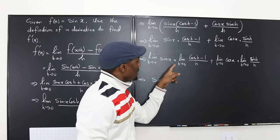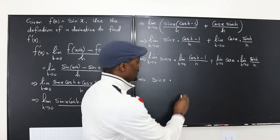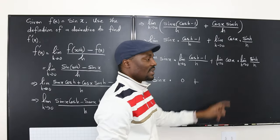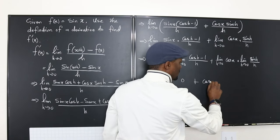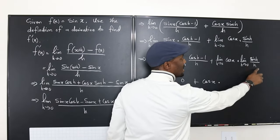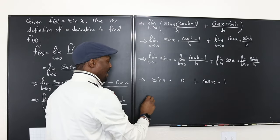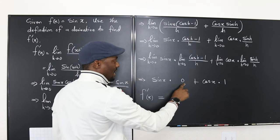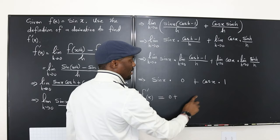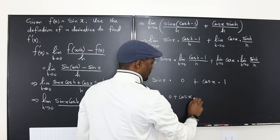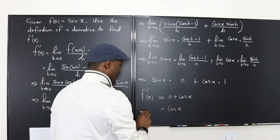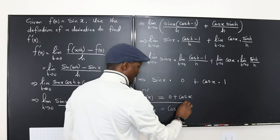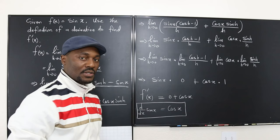The limit of (cosine h − 1)/h is 0, and cosine x has nothing to do with h so it stays, multiplied by the limit of sine h over h which is 1. So f prime of x equals sine x times 0, plus cosine x times 1, which equals cosine x. Therefore, d/dx of sine x equals cosine x.